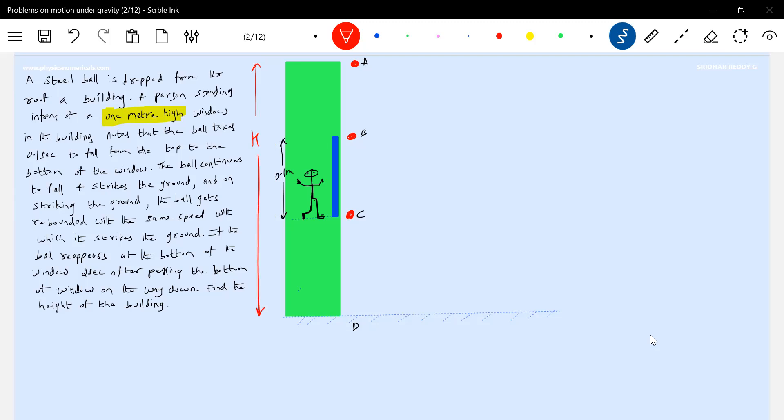This is H which we have to calculate, the height of the building. So what are the information? We know TBC, time taken by the ball to move from B to C. It is dropped, released from rest here. Then it will fall, take 0.1 seconds to pass through this, strike, rebound with the same speed, and reappear again. Here we'll take VB, VC. And gravity is present, everything happens in the presence of gravity.